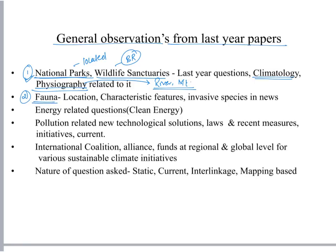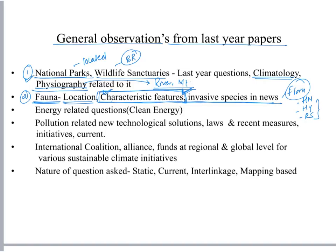Second, considering biological diversity — especially the fauna part — animal species, where are they located, where can they be found, and their characteristic features: whether that animal is a mammal, whether it is a herbivore or carnivore, and whether that animal hibernates. One should know the characteristic features by just Googling the animal online. Also, invasive species that are in news are mainly focused upon — in general, the flora part is mainly focused: Himalayan Nettle, Himalayan Yew, Red Sanders, etc.